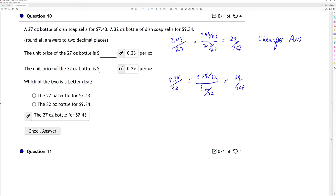A 27 ounce bottle of dish soap sells for $7.43, a 32 ounce bottle of dish soap sells for $9.34. Find the unit price of each. So for the first one there, 27 ounces for $7.43. I divide my numerator and denominator by 27, I end up with $0.28 per ounce.